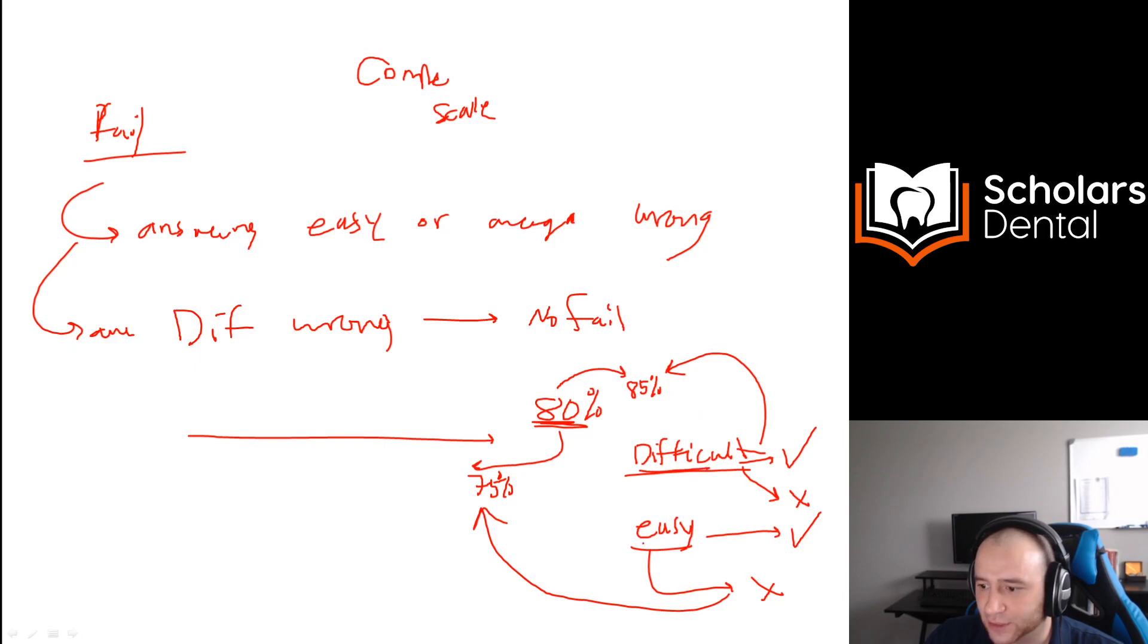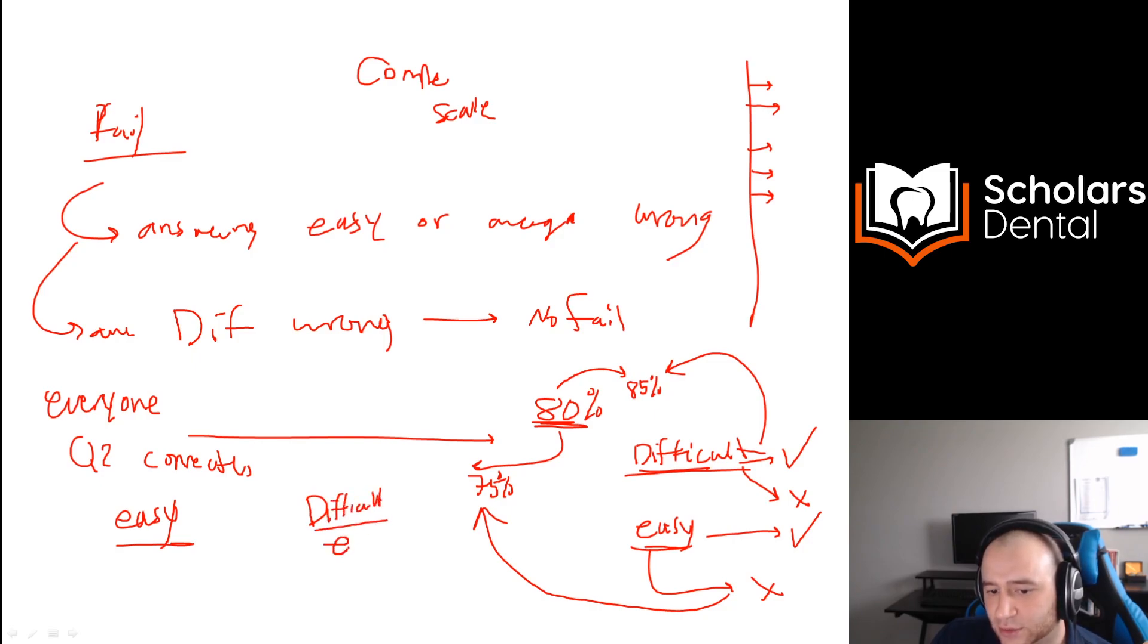And how do they mark what is difficult and easy? By the number of people that answer them. So if everyone answers question two correctly, it's considered easy. There's no advantage—you all took one step forward so you're all the same. No one is winning. Let's say there's a really difficult question—everyone answers, let's say question 40, everyone is wrong. That's considered also even because no one took a step forward. You understand? Imagine it's a race—it's even, everybody got it wrong.